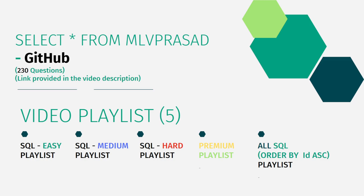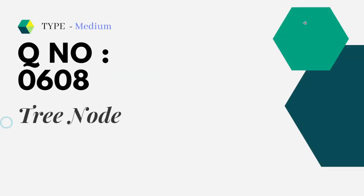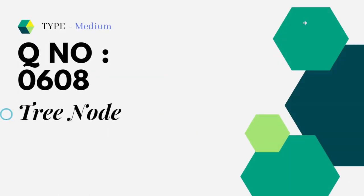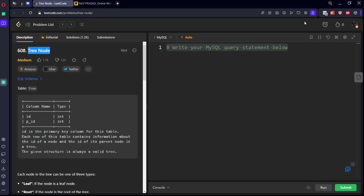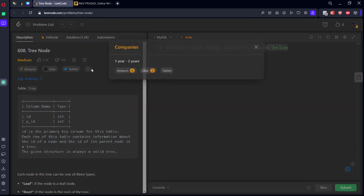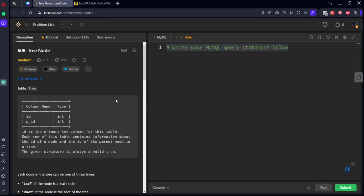Let's see the question we are solving today. It is a medium-type question, number 608: Tree Node. It is asked at Amazon, Uber, and Twitter, and it is asked many times.